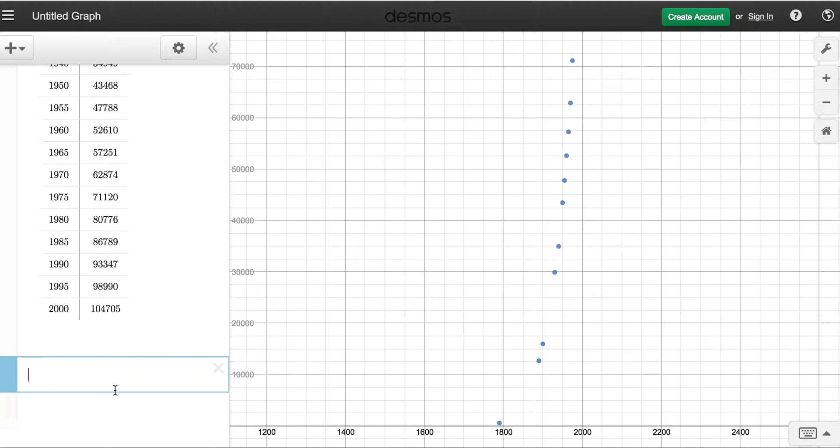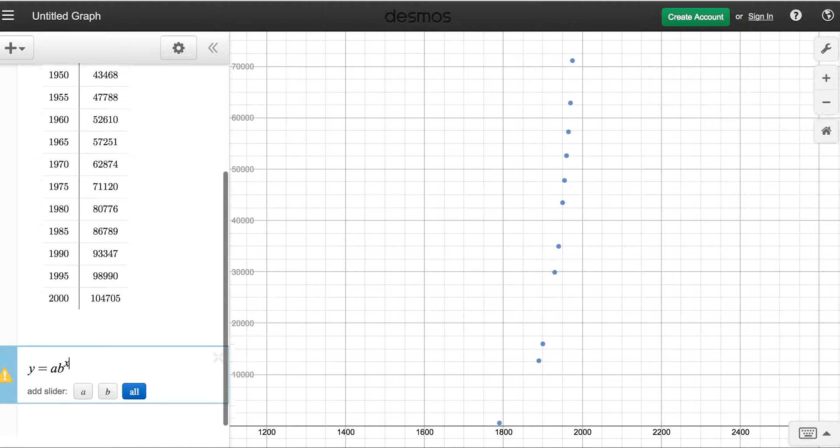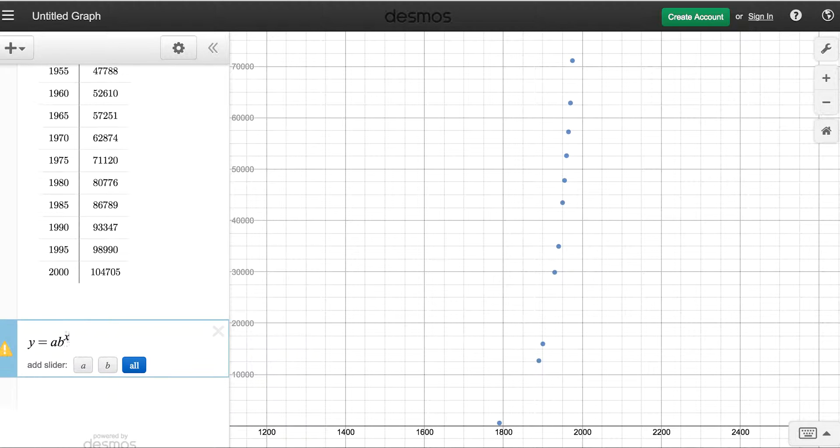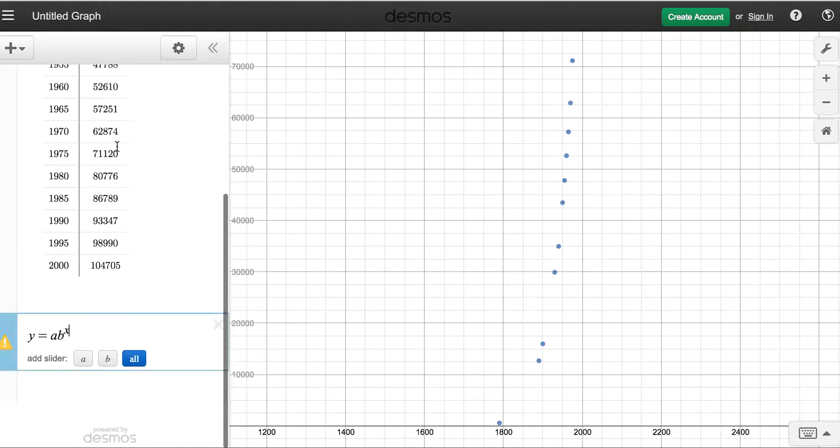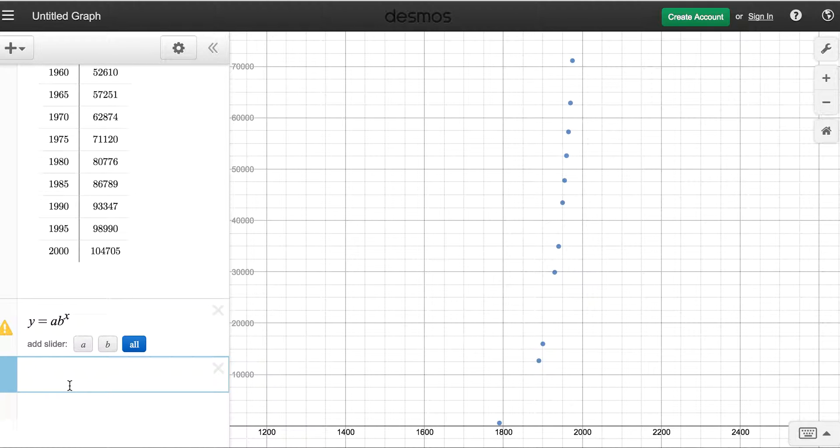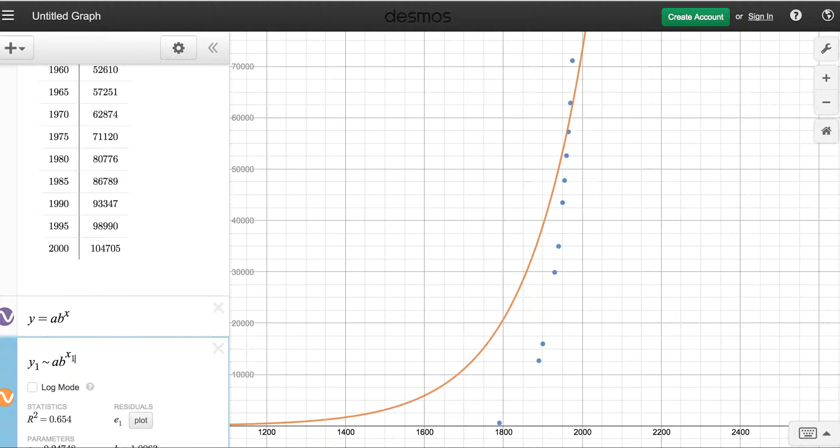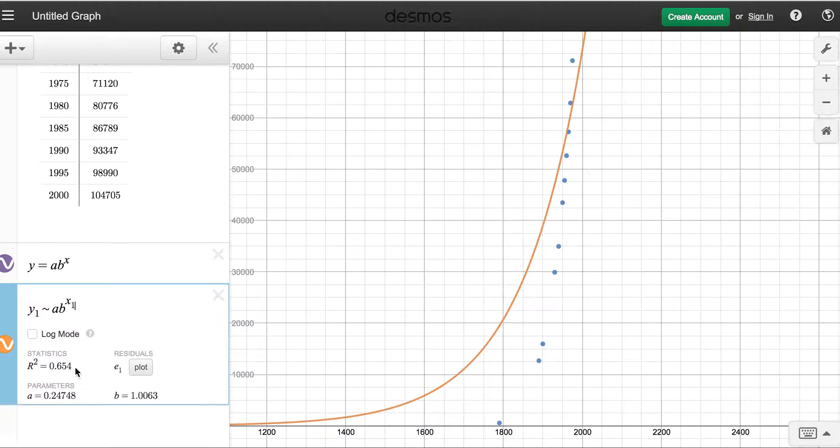When we're defining your exponential equation, it's y equals ab to the x. So we're going to do a very similar thing like what we did with linears in terms of referring to our variables, x1 and y1. So I'm going to go ahead and right underneath that. I'm going to do y1 approximately ab to the x1. You can do that subscript up there as well. If we go down and we look at this, oh, look at your r squared value, 0.654. If we look at the graph, the graph really doesn't match the data very well. This is making me think that maybe we didn't use the right parent.